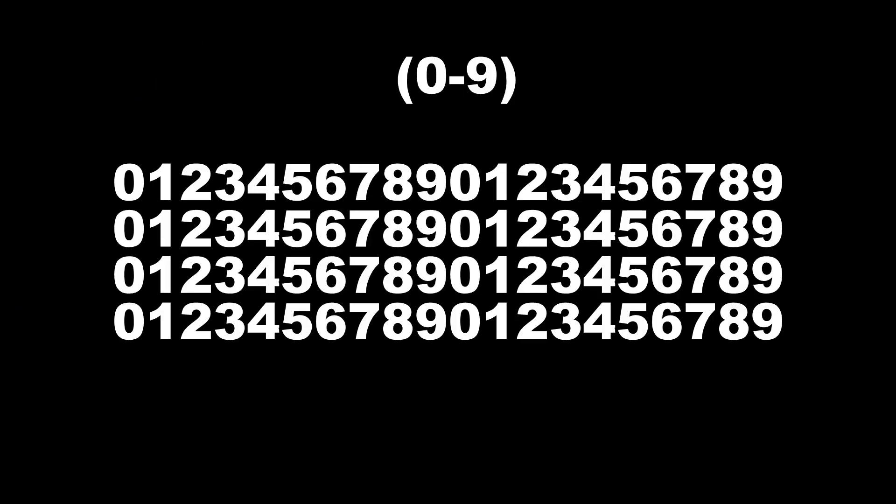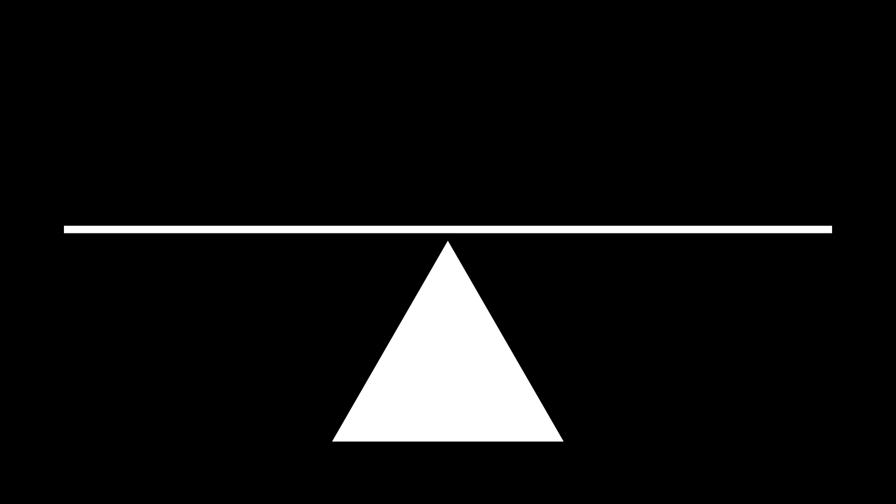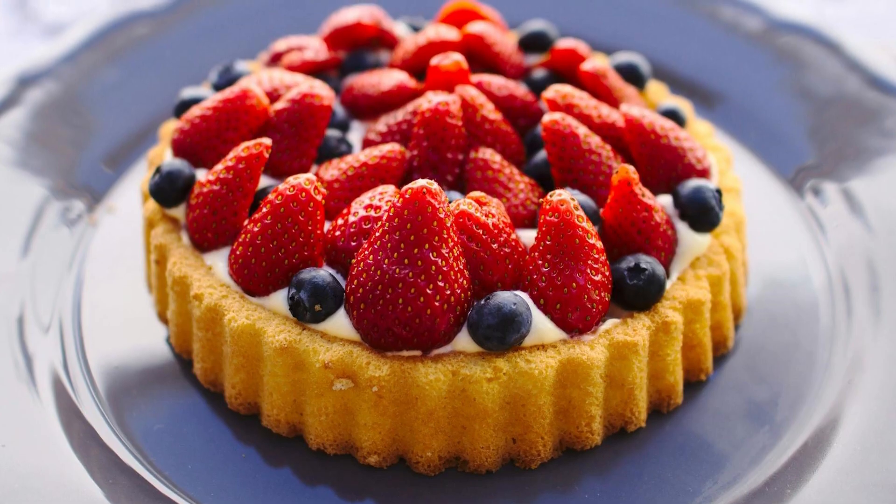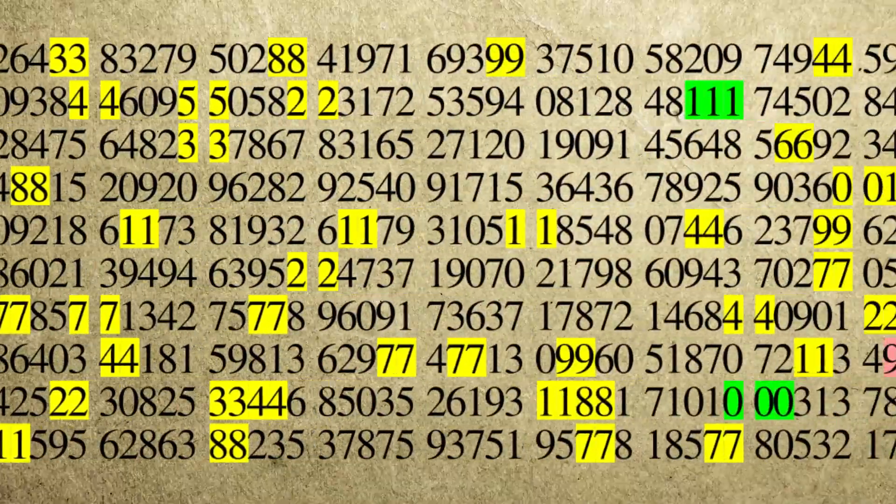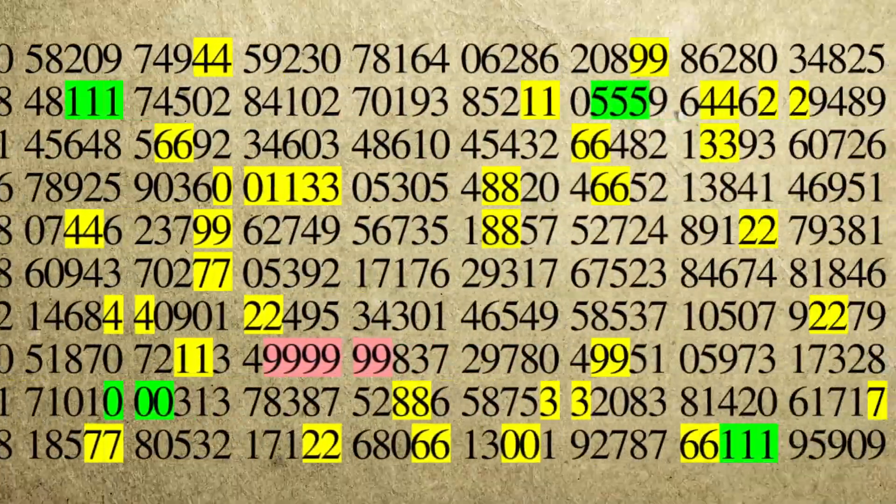Normal number means every digit and sequence of digits appear with equal frequency. If pi is normal, then every possible sequence of numbers must appear somewhere in its infinite decimal expansion.